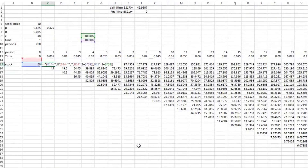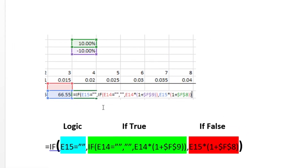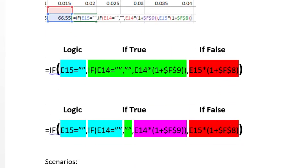You'll see this formula is an IF statement followed by another IF statement — it looks a bit long and complicated. Here are some visuals to help break it down. It's basically saying: if this logic is true, we're going to do this; and if it's false, we're going to do this. In our binomial tree, we have three scenarios. If E15 and E14 are both blank, therefore the cell must be blank.